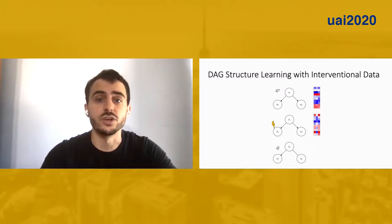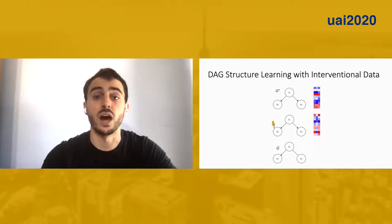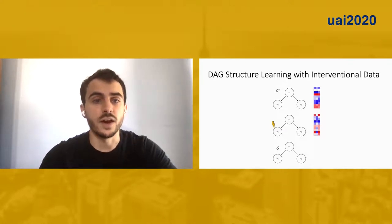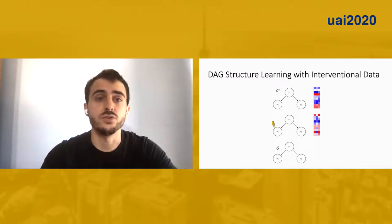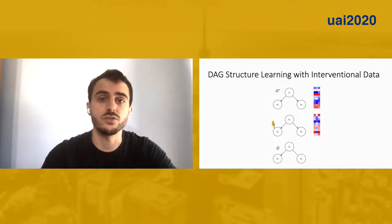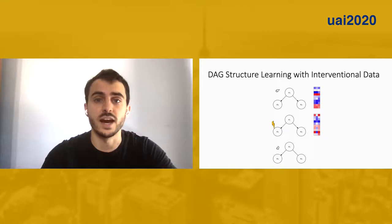Combining conditional independences from the observational data, along with the fact that the conditional distribution of X1 given X2 has changed, we can rule out that X2 points to X1 and obtain a partially directed graph G hat representing the interventional equivalence class.